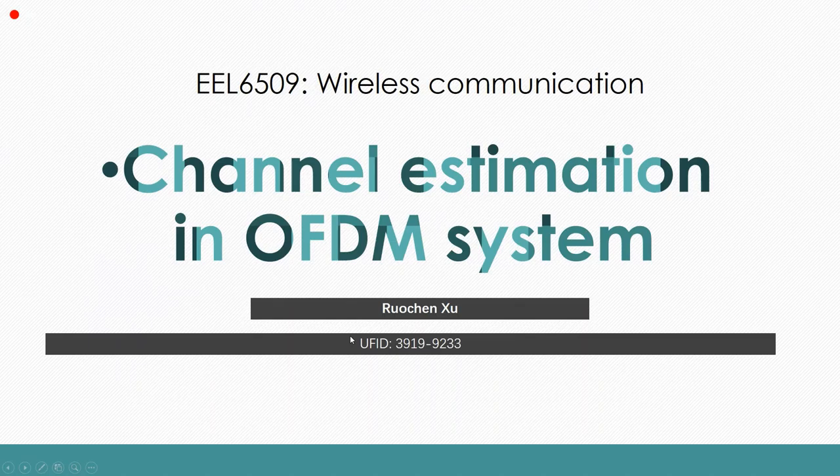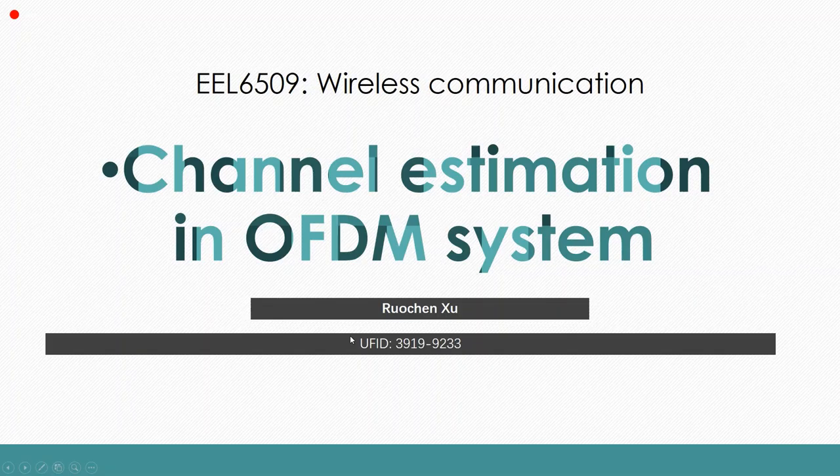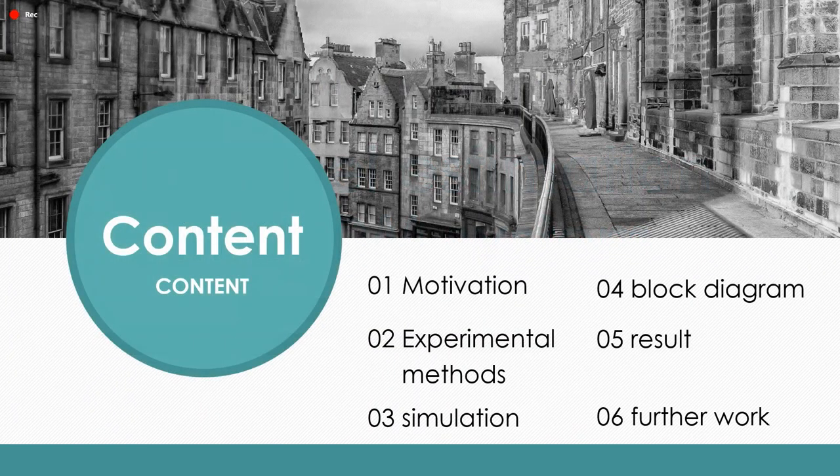My name is Ruo Chen Xu and my UFID is 3919-9233. The presentation has six main parts. The first one is the motivation, the second one is experimental methods, the third one is simulation parameters, and the fourth one I made a block diagram for the whole channel.